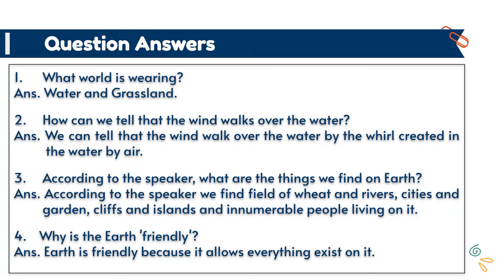Let us discuss the question-answers of this poem. Question one: What world is wearing water and grassland? Question two: How can we tell that wind walks over the water? We can tell that the wind walks over the water by the ripples created in the water by air. Question three: According to the speaker, what are the things we find on earth? We find fields of wheat and rivers, cities and gardens, cliffs and islands, and innumerable people living on it. Question four: Why is the earth friendly? The earth is friendly because it allows everything to exist on it.